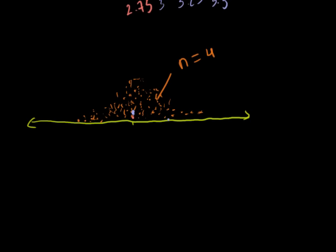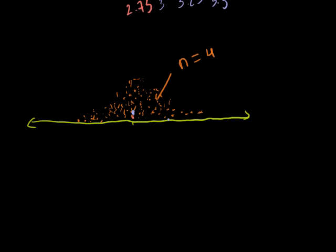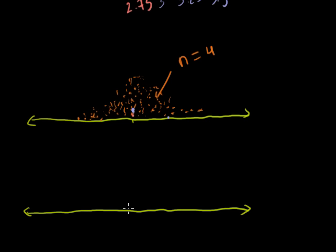We'll discuss this in more videos. But if I were to plot 10,000 of the sample means for n equal to 20, it's going to even more closely approximate a normal distribution. And it's going to have the same mean, but it's going to have a smaller standard deviation. This is going to more and more approach a normal distribution.